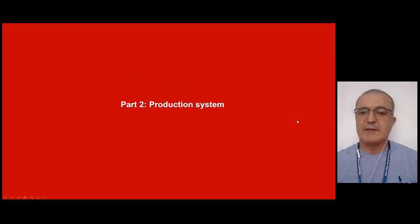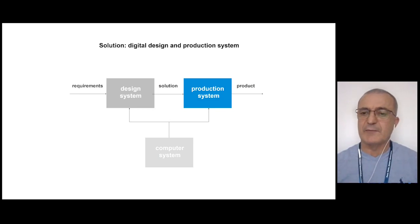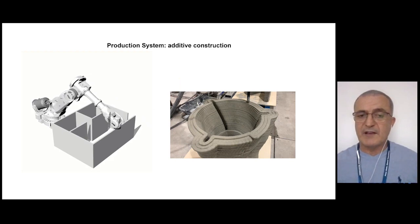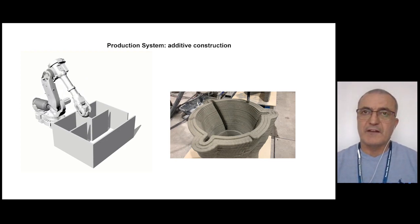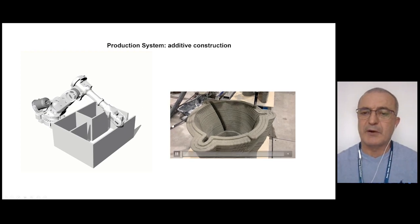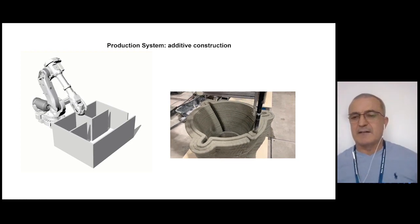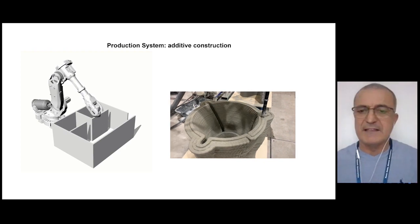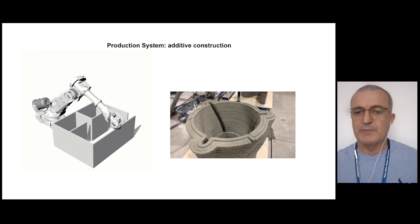The next step is the production system, which allows you to quickly and in an expedited way materialize the solutions output by the design system. At the moment we are exploring additive construction — the use of additive manufacturing at the construction scale. Like you see on the right-hand side, this is the printing of a capital of a classical column, a very large one, printed in our lab.